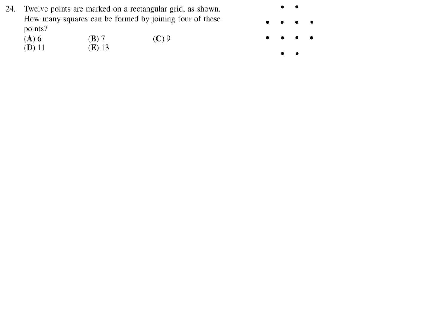12 points are marked on a rectangular grid as shown. How many squares can be formed by joining 4 of these points? So we got 1 here. 2, 3, 4, 5. So when I draw it that way, I get 5. So, so far, I still have a long way to go before I reach any of these.